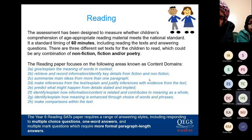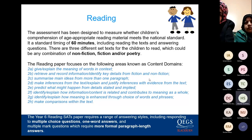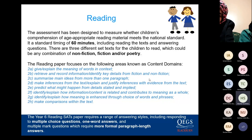The reading assessment has been designed to measure whether children's comprehension of age-appropriate reading material meets the national standard. It's a standard timing of 60 minutes, including reading the text and answering questions. There are three different set texts for the children to read, which could be any combination of non-fiction, fiction and/or poetry. The reading paper focuses on the following content domains: giving the meaning of words in context; retrieving and recording information and identifying key details from fiction and non-fiction texts; summarising main ideas; making inferences and predictions; identifying and explaining how information is related and contributes to the meaning of the text as a whole; identifying how meaning is enhanced through choice of words and phrases; and making comparisons within the text.